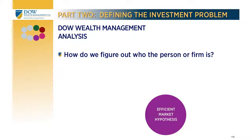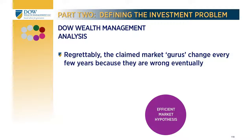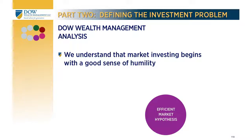How do we figure out who this person or firm is? If there were such a talent, why did so many financial companies across the globe — with billions of dollars at their disposal to find such a person — go belly up? If these companies could not identify such a person, why should we expect any better luck? The people considered to be market gurus change every few years and have a bad habit of being badly wrong eventually. I've grown wary of people in my profession who claim to know far more than they really do.